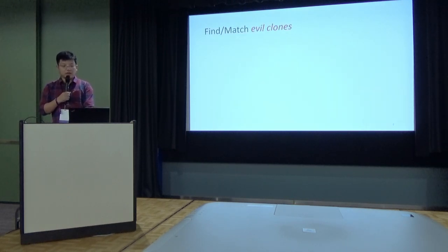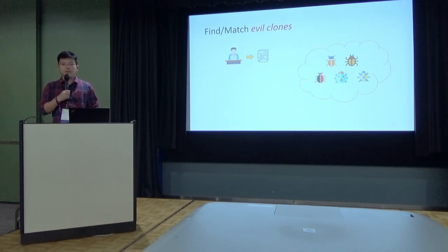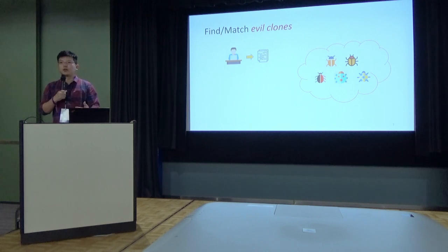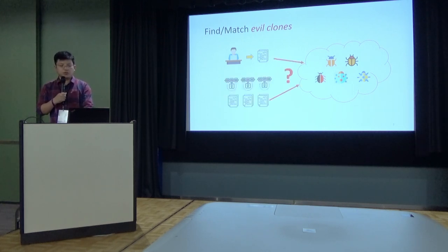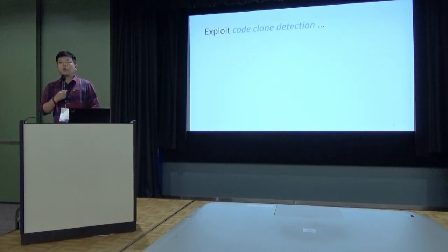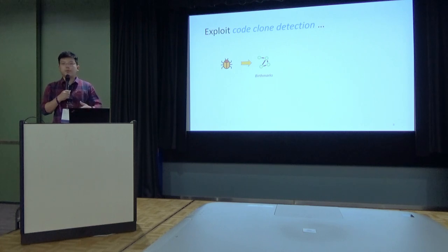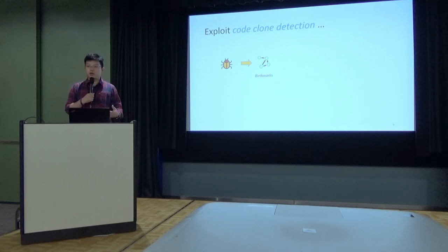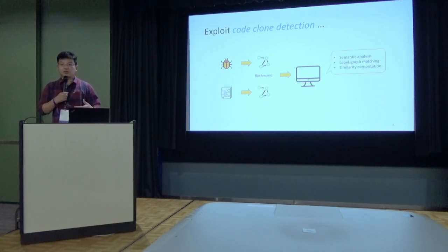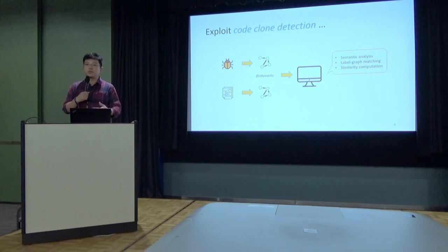What we are trying to do is: when you have your contract, we would like to know whether your contract can be matched to some existing known security issues, instead of directly analyzing them. You can also do this for contracts which are already deployed on the blockchain. To this end, we are exploiting the idea of code clone detection. Specifically, we generate a birthmark representation for the vulnerable contracts or the vulnerability itself, and do the same for your contracts, and analyze the semantics of them.